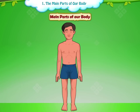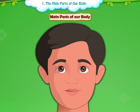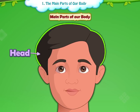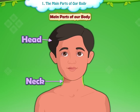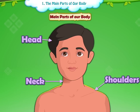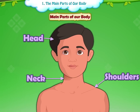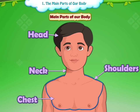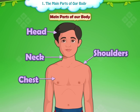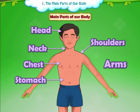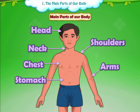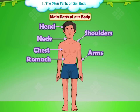The main parts of our body are the head, the neck, the shoulders, chest, stomach, arms and legs.